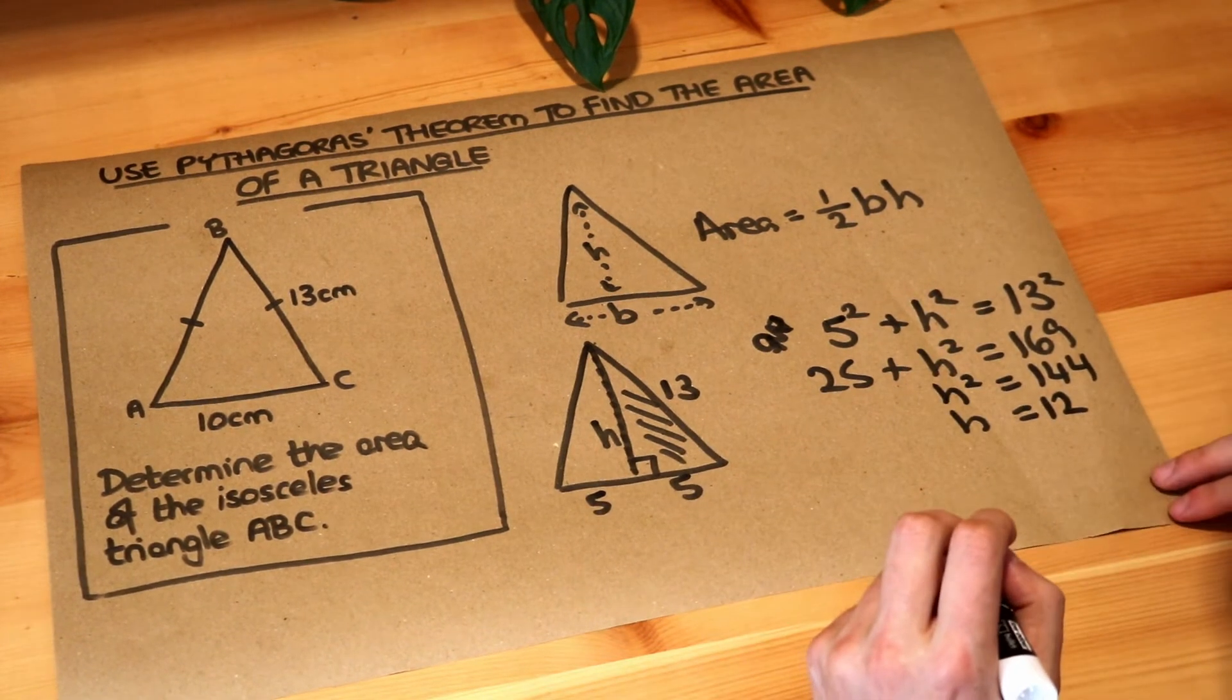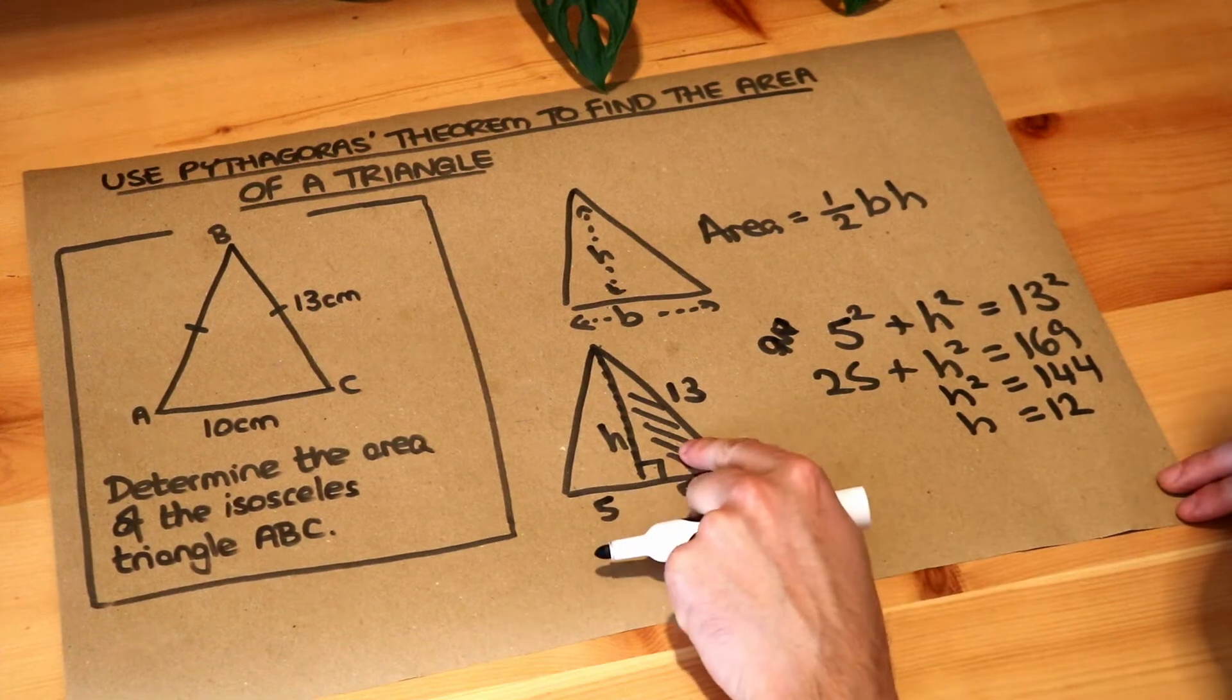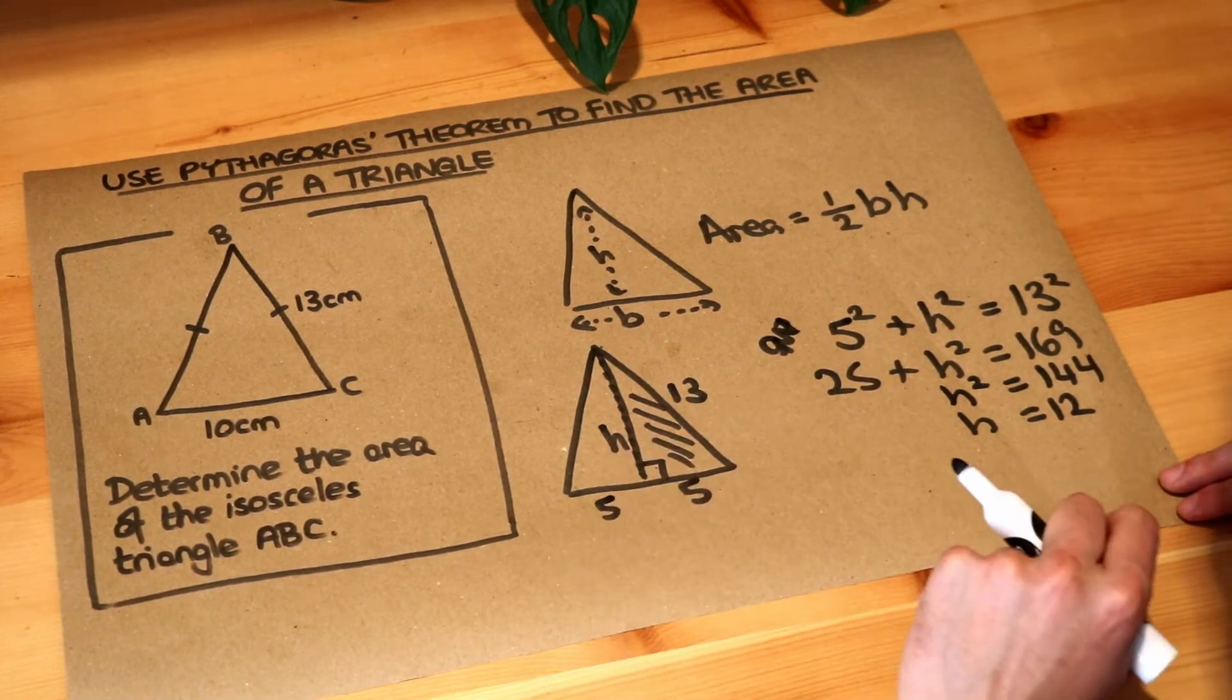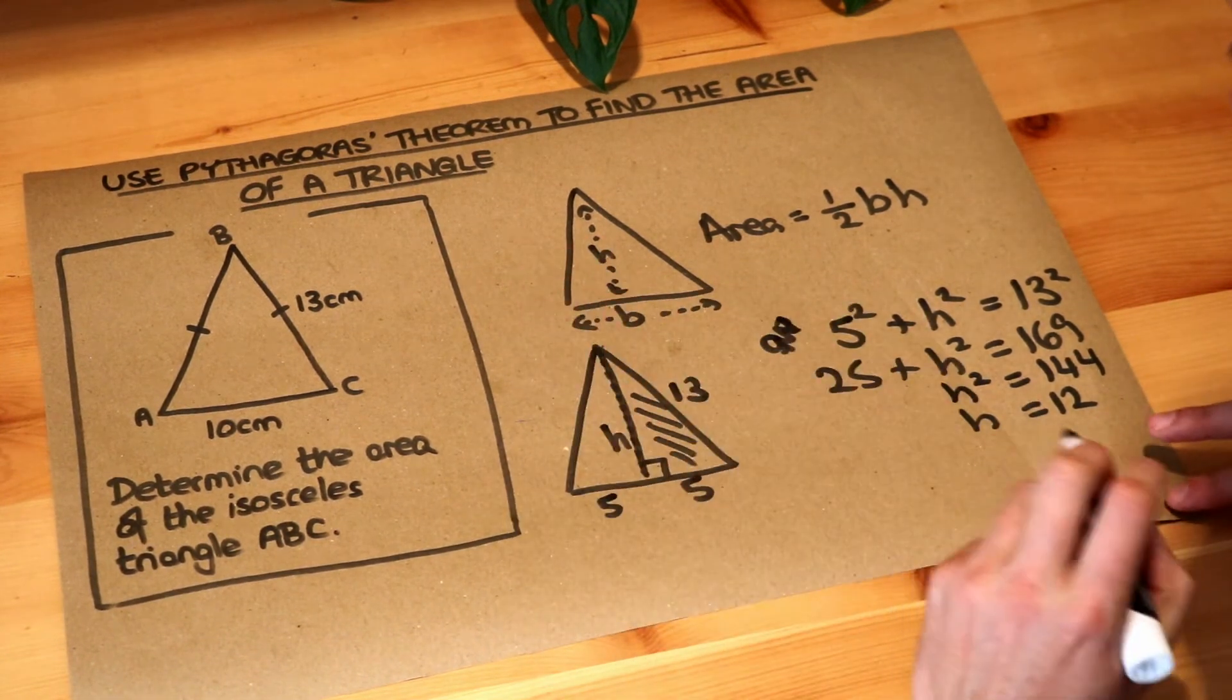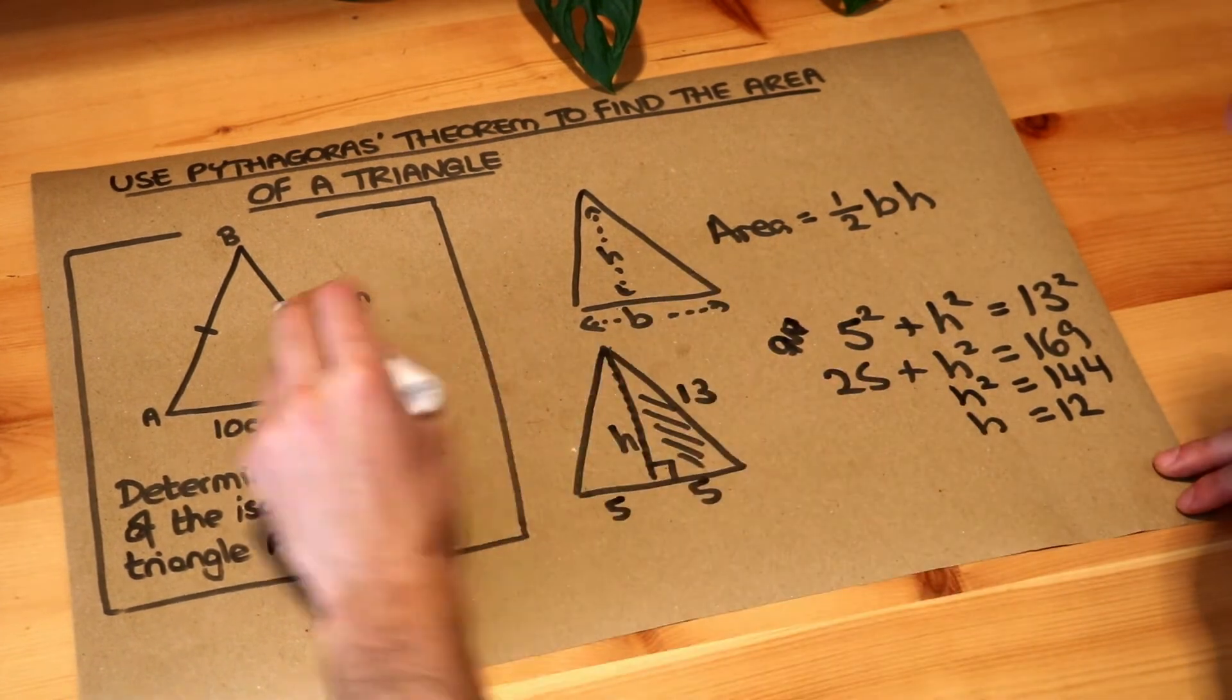We've used Pythagoras to find a shorter length of a right-angled triangle, and now we've got everything we need to find the area of this triangle.